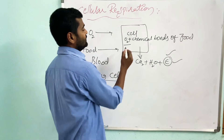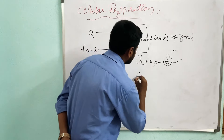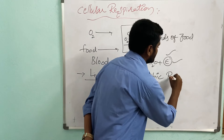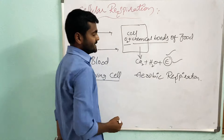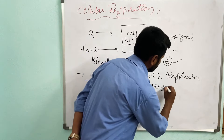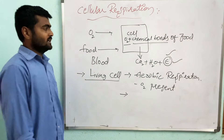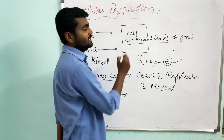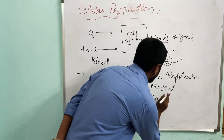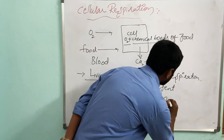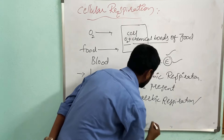Cellular respiration depends on the oxygen level. If the oxygen supply is sufficient, the breakdown of food material takes place in the presence of oxygen — that is called aerobic respiration. If oxygen is not sufficient or absent, food material still breaks down and releases a very small amount of energy — that is called anaerobic respiration, also called fermentation.